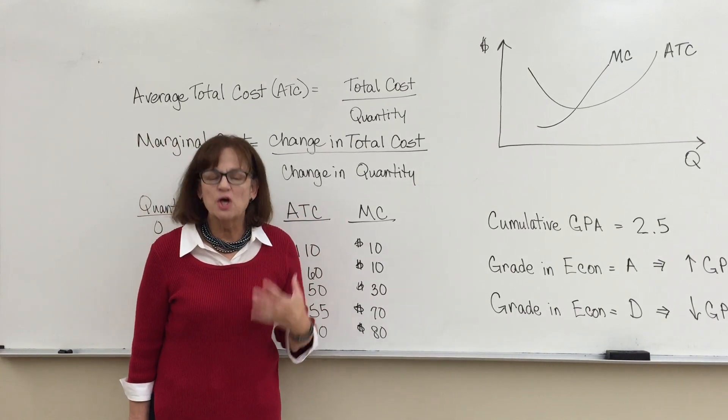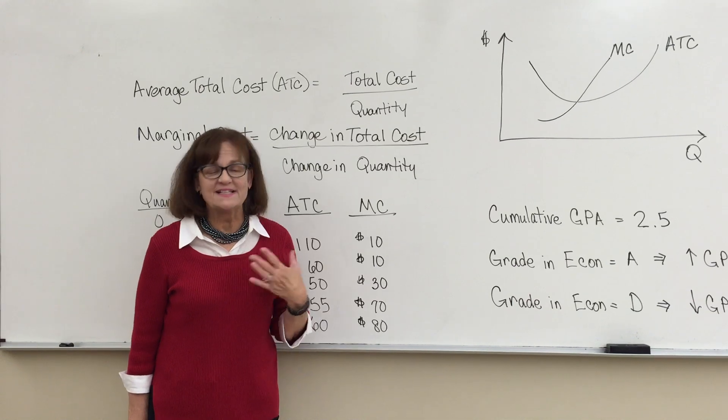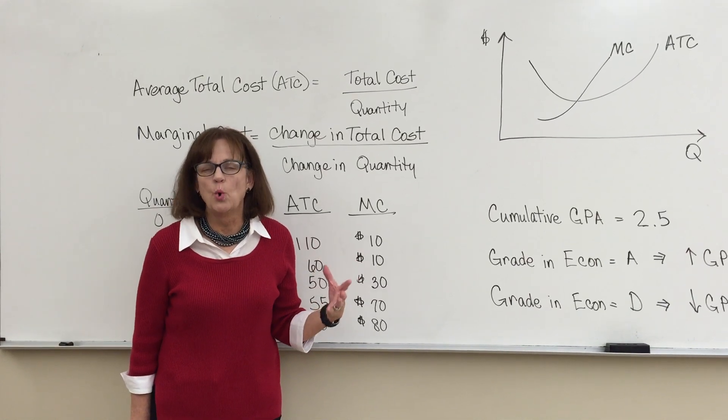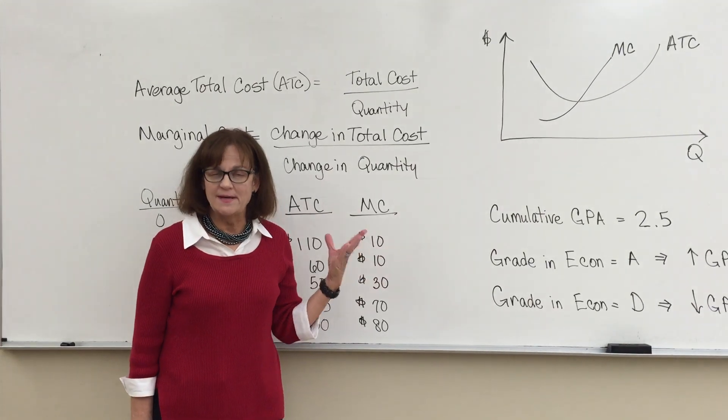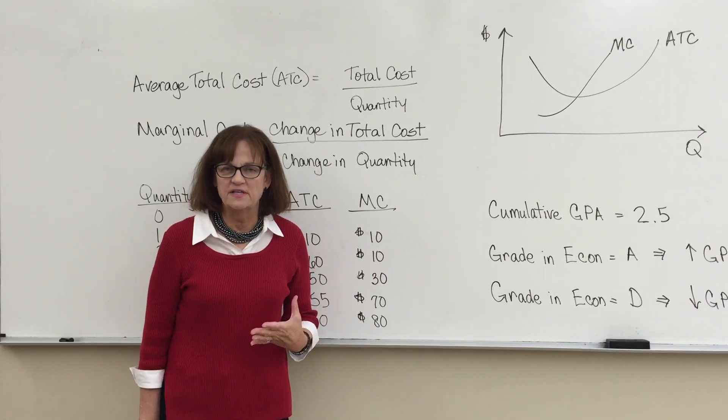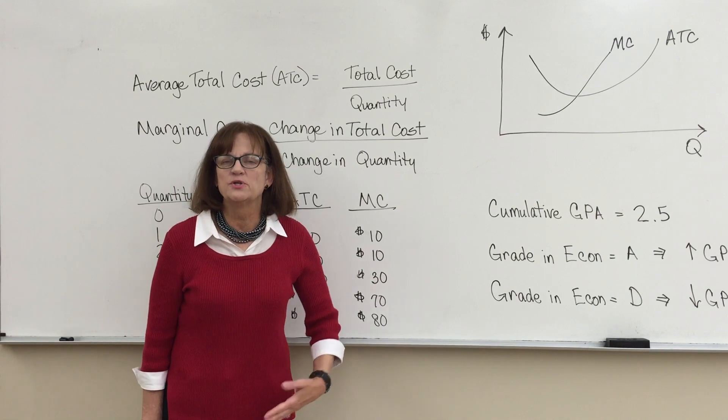You need to know the average total cost because that's the average cost of producing one unit, and if you don't know your average total cost, you cannot set a price that will generate a profit. So it's an important number to know.